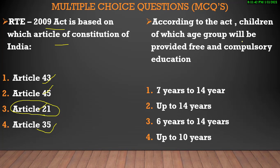According to the Act, children of which age group will be provided free and compulsory education? Options: 7 years to 14 years, 6 years to 14 years, या up to 10 years. The correct answer is 6 to 14 years — so 6 to 14 years आपका correct answer है.